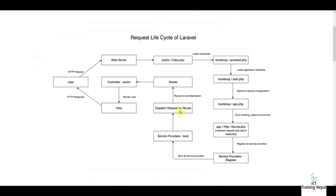The router, which is in the routes/web file, then calls the route, which calls the controller. The controller action happens, and the action calls the render and view, and then the response is returned to the user.